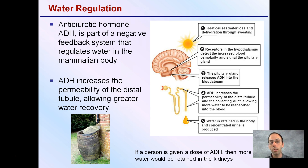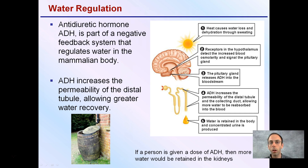ADH increases the permeability of distal tubules, allowing for greater water recovery. So for example, if a person is given a dose of ADH, then more water will be retained by the kidneys. So how does this look in an actual situation?